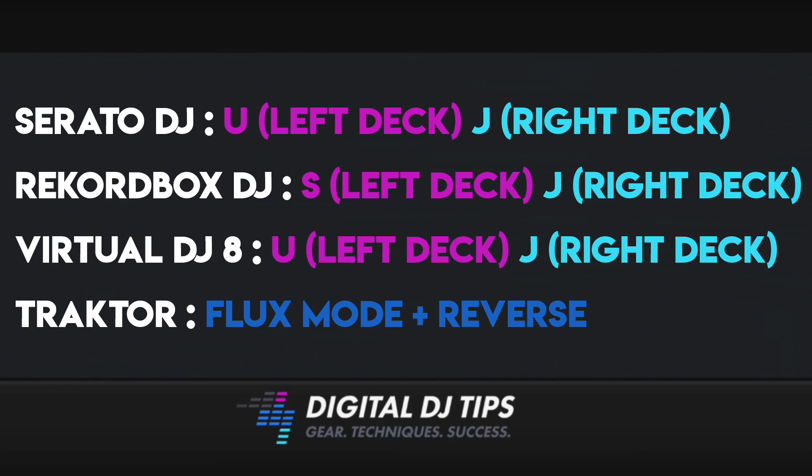For Serato DJ, the buttons are U and J on your keyboard. For Rekordbox DJ, it's S and J. For Virtual DJ 8, it's U and J, but you need to load the factory optimal keyboard preset over in the preferences.